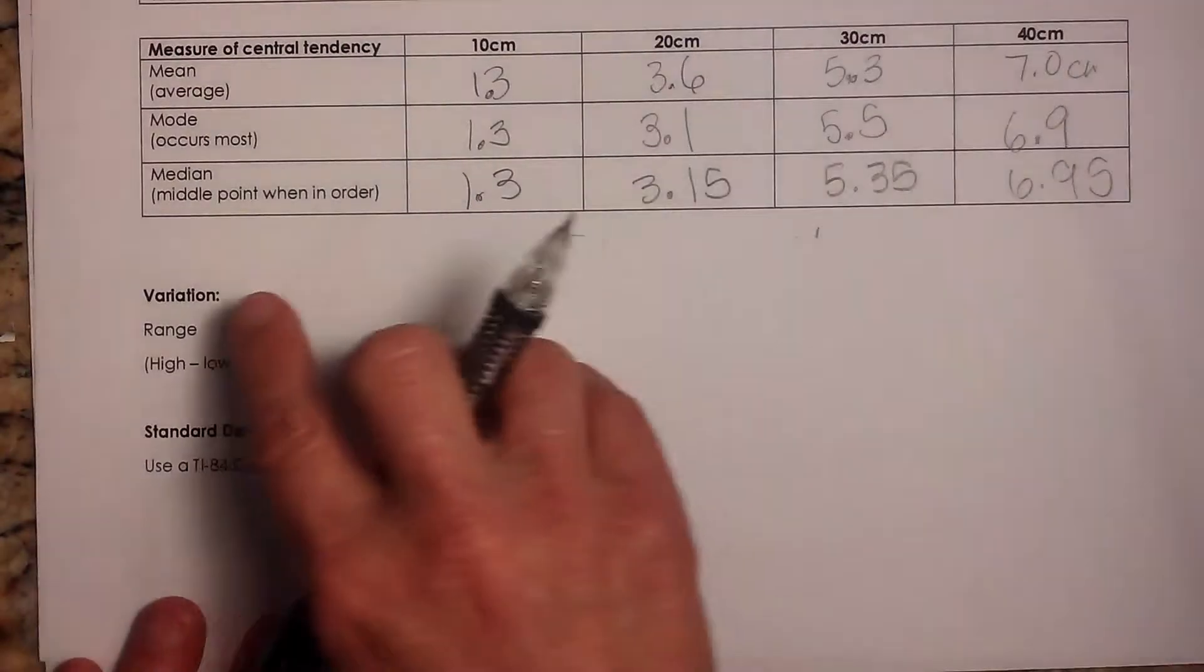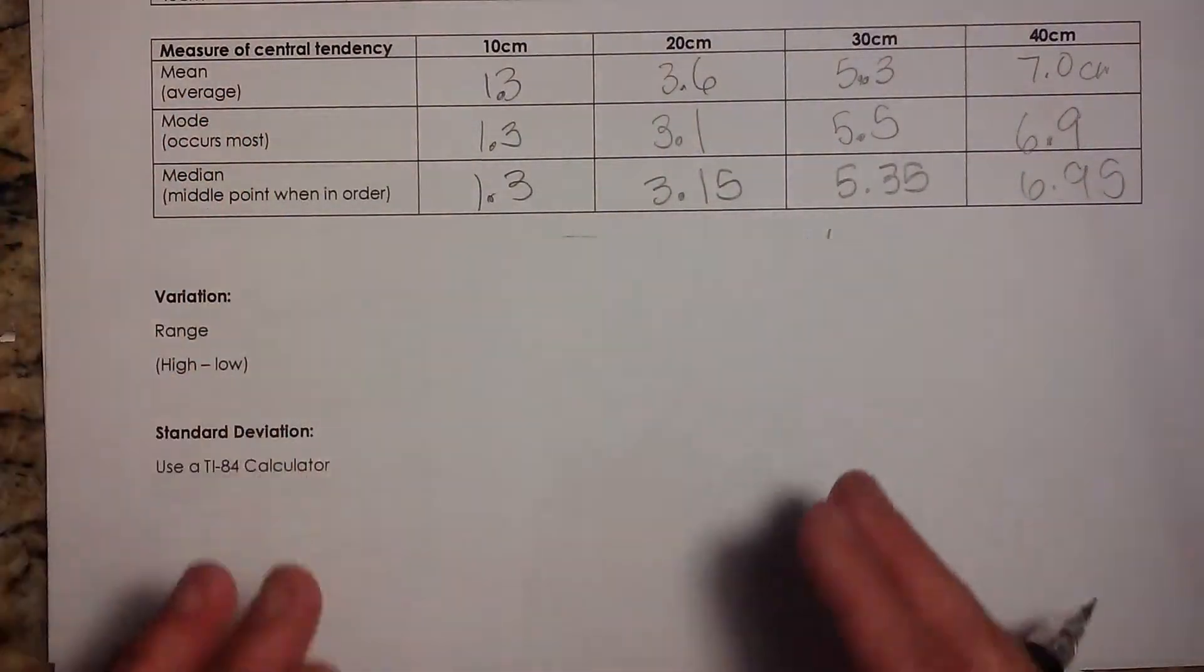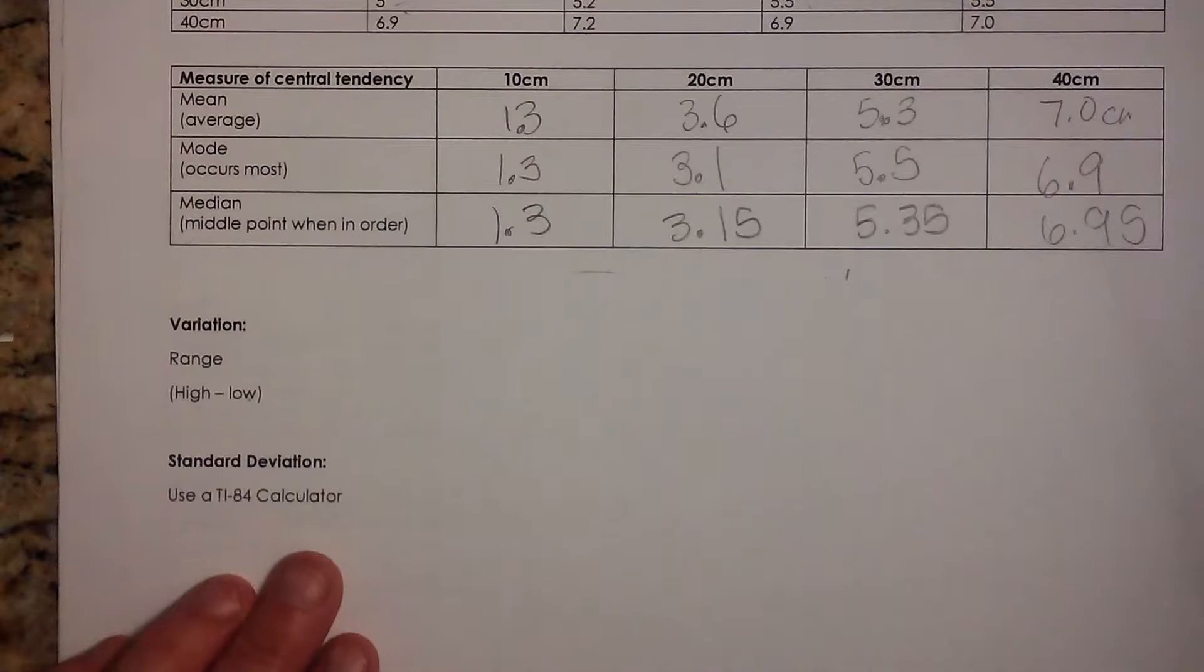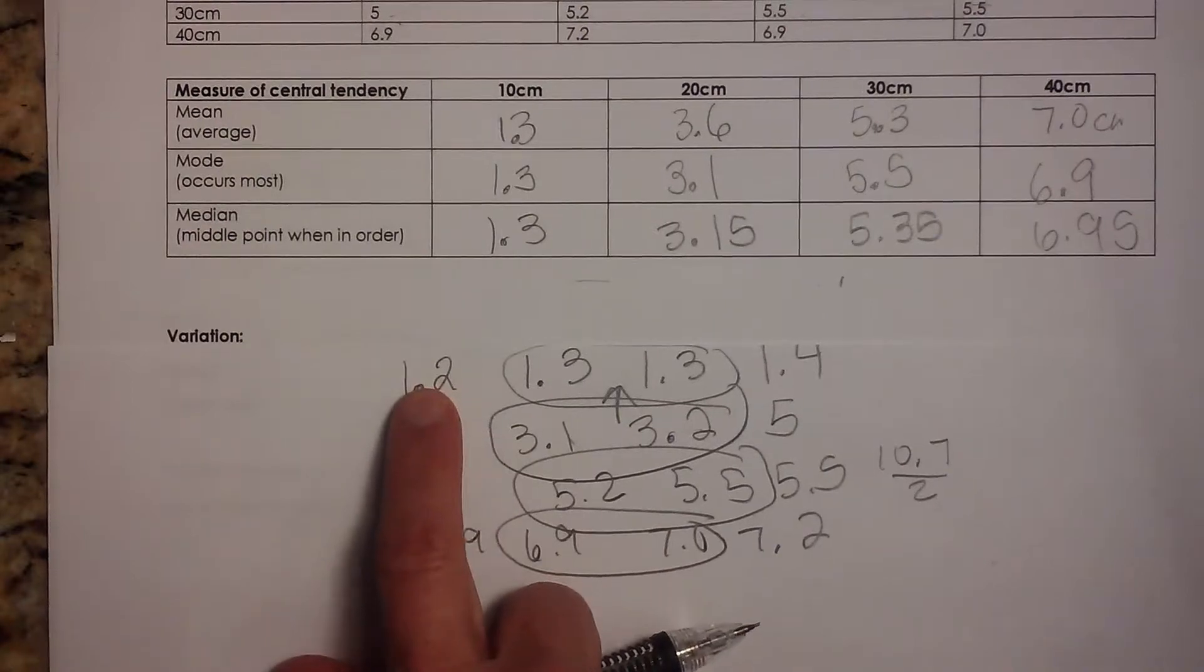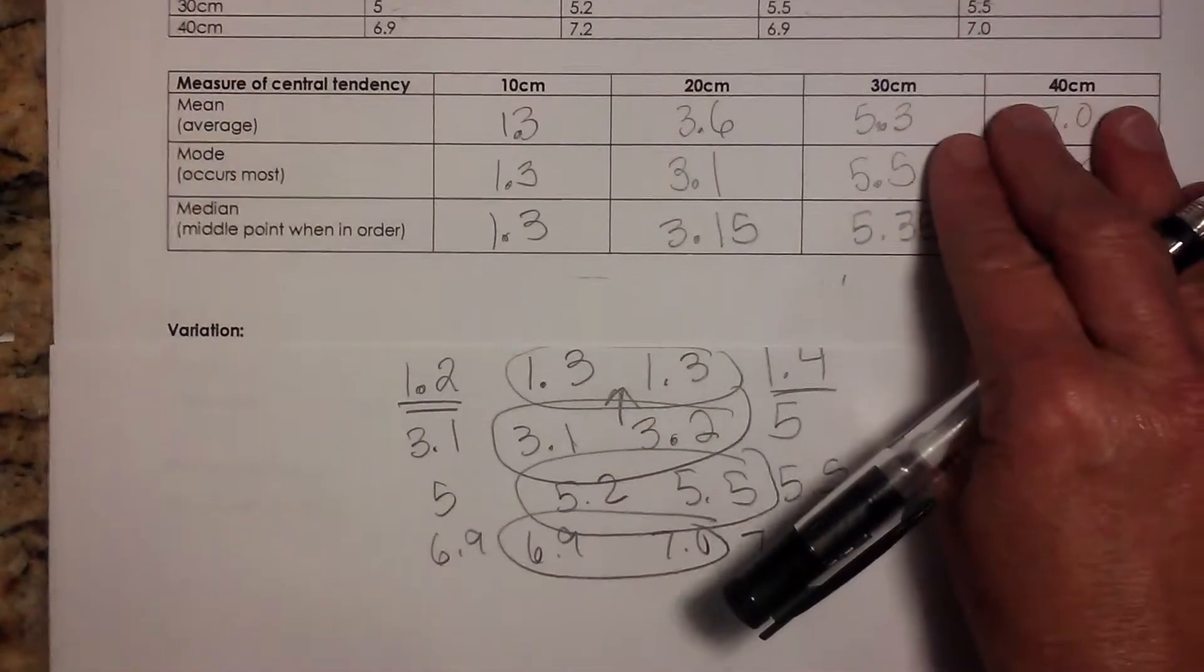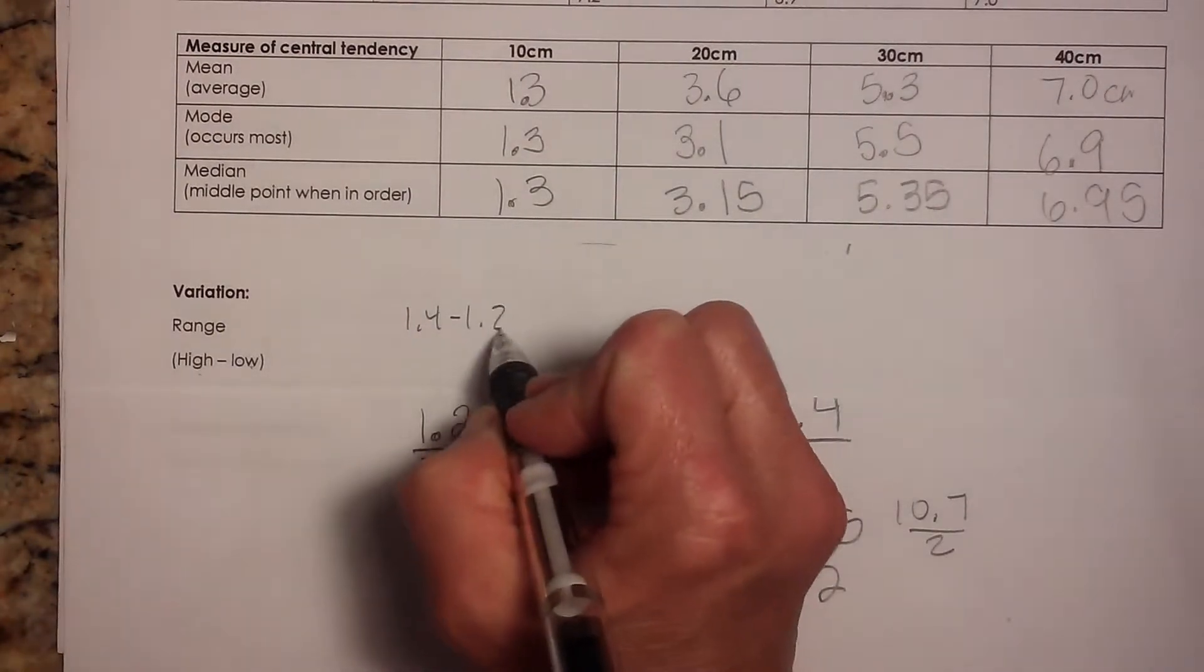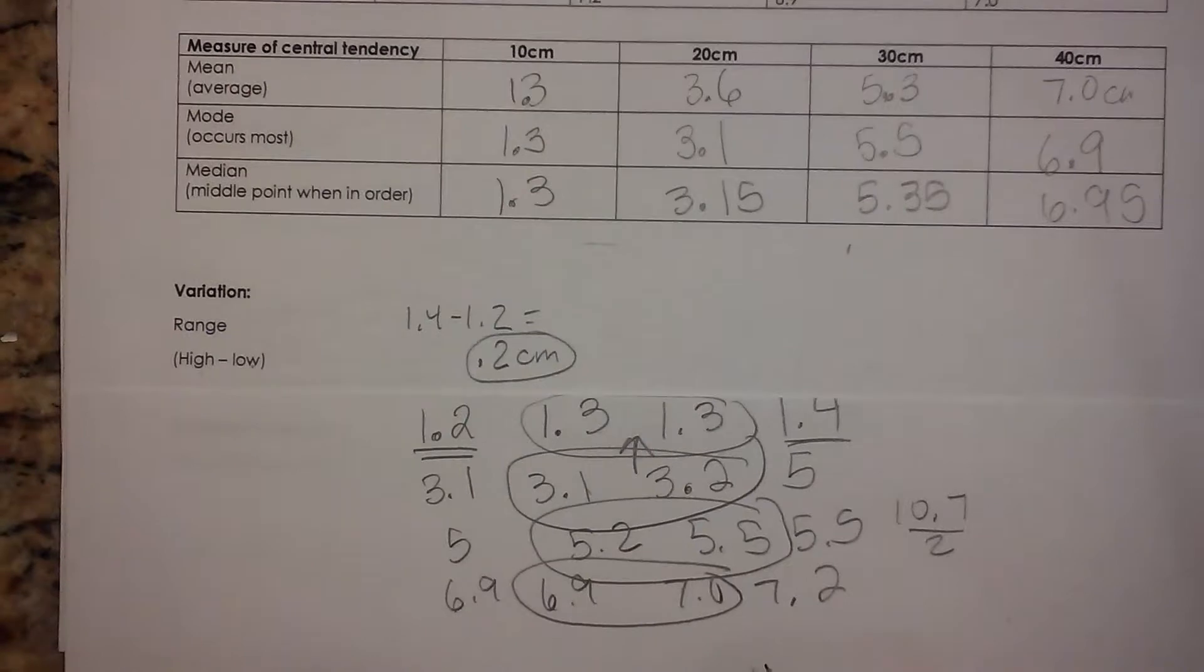We also want to take our data and we want to see its variation. How varied is it? How widespread is our data? How far apart is it? Well, the very easiest thing we can do is find the range. To find the range, we just take the highest value and the lowest value. So I can actually use my little list here because I've already got it for the mode in order from least to greatest. So I'm just going to take my highest value and subtract my lowest value. So on this one, for 10 centimeters, my range is just going to be 1.4 minus 1.2, which is just 0.2 centimeters. So the range is actually quite small on that one. Okay, now let's look at the second one. Okay, our high is 5 and our low is 3.1. So when we subtract that, we get 1.9 centimeters. So that's a little more spread out.